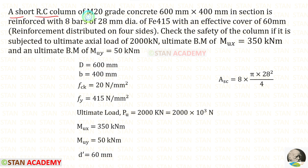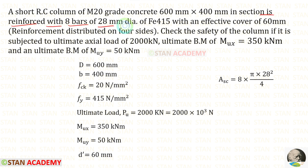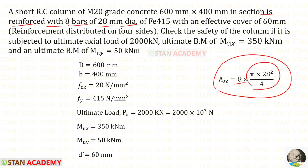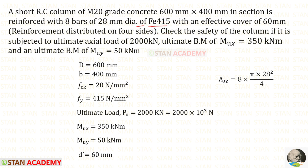A short RC column of M20 grade concrete, FCK is given as 20, with a section of 600 mm × 400 mm — D is given as 600 and B is given as 400. It is reinforced with 8 bars of 28 mm diameter, so area of steel ASC is equal to 8 × π × 28² / 4, of Fe 415 steel where FY is given as 415, with an effective cover of 60 mm, so D' is given as 60 mm.